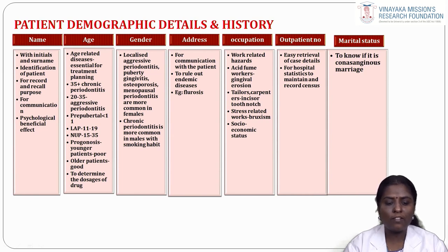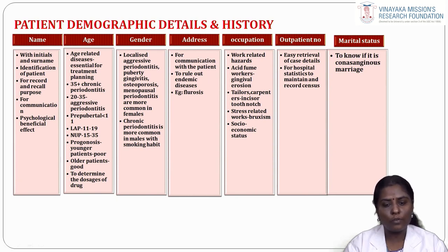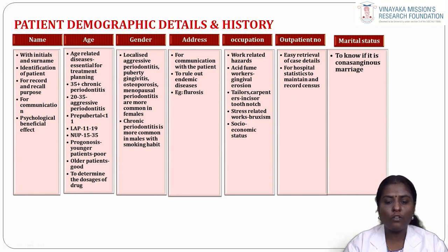Prognosis in younger patients is poor compared to older patients. Age also helps in determining the dosage of drugs to be prescribed. Gender: localized aggressive periodontitis, puberty gingivitis, osteoporosis, and menopausal periodontitis are more common in females. Chronic periodontitis is more common in males with smoking habits. Address is used for communication with the patient to rule out endemic diseases, for example fluorosis.